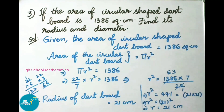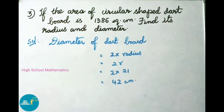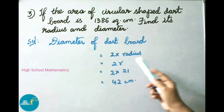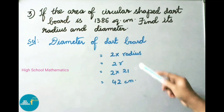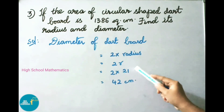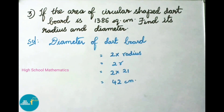Therefore, the radius of the dart board is 21 centimeters. Now we have to find the diameter of the dart board. Diameter equals 2 times radius, that is 2R. That equals 2 into 21 centimeters, which is 42 centimeters. Therefore, the diameter of the dart board is 42 centimeters.